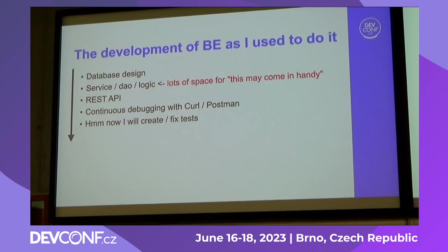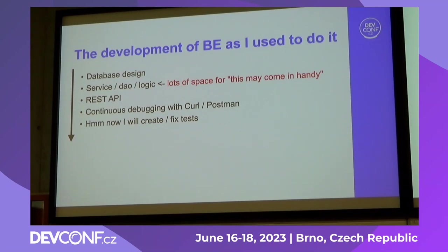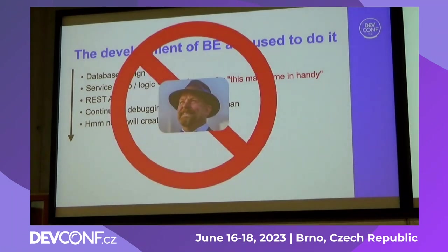But what I learned at school: create database design first, provide services and DAO logic for all functionality — and there is a loss of space for unnecessary features. As a software house, you don't want to do that. Because after that, you come up with REST API. And how do you test that? Continuously debugging with Curl or Postman? Maybe fix it later when I'm done — but usually you're not.